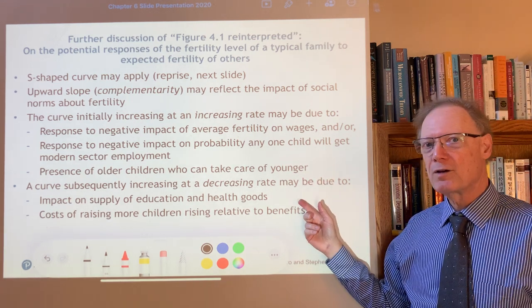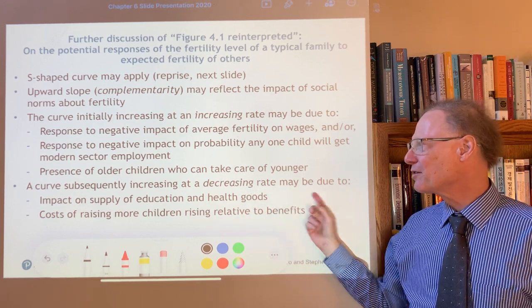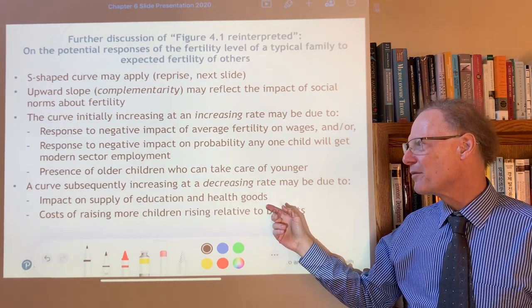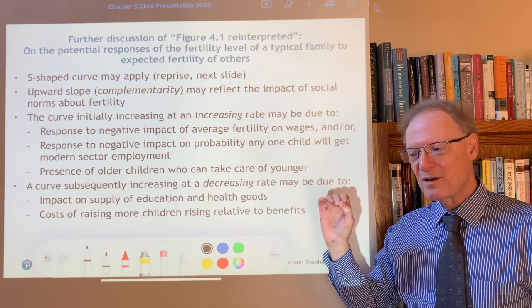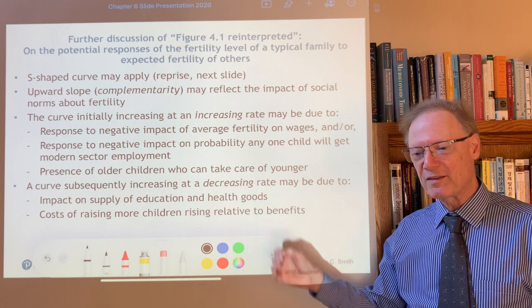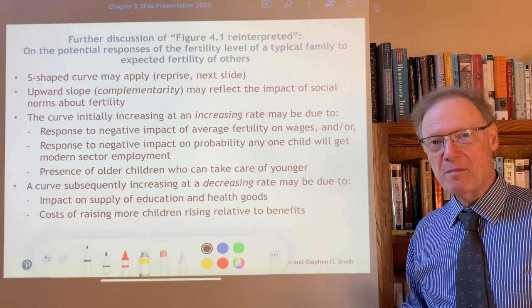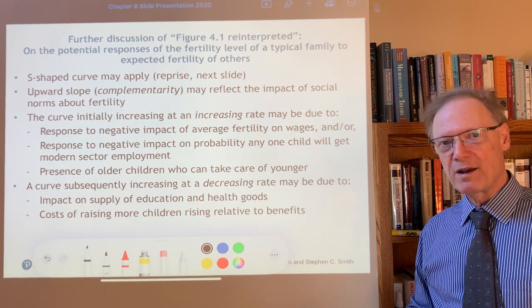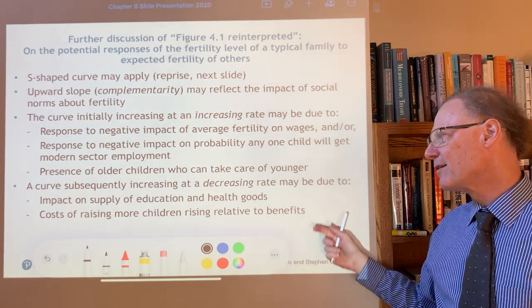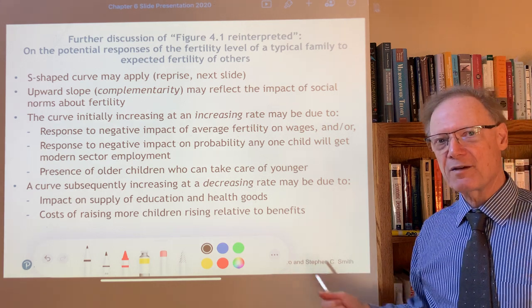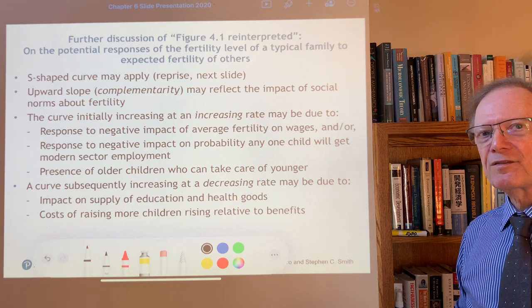There's also a benefit that older children can care for younger ones. However, the curve eventually increases at a decreasing rate — for example, a large enough village may support a school, but beyond a point education and health facilities get crowded, becoming a negative effect that slows the response. The costs of raising more children also rise relative to benefits after household size reaches a certain stage. This explains multiple equilibria with respect to fertility choice. In the next episode we'll go on and talk about population policy.